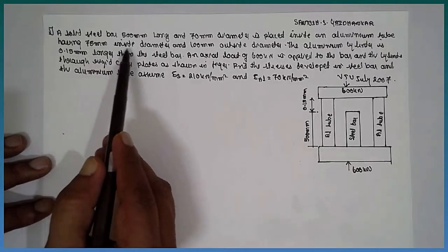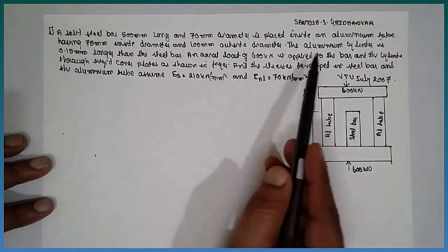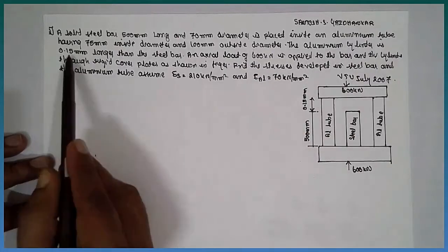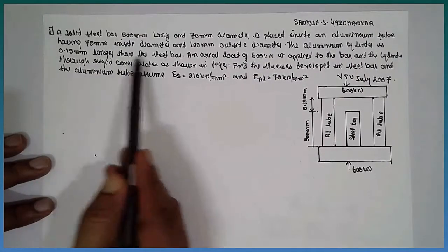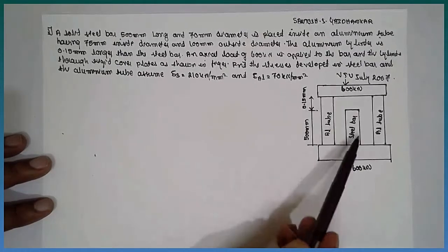Having 75 mm inside diameter, 100 mm outside diameter, the aluminum cylinder is 0.5 mm longer than the steel bar.